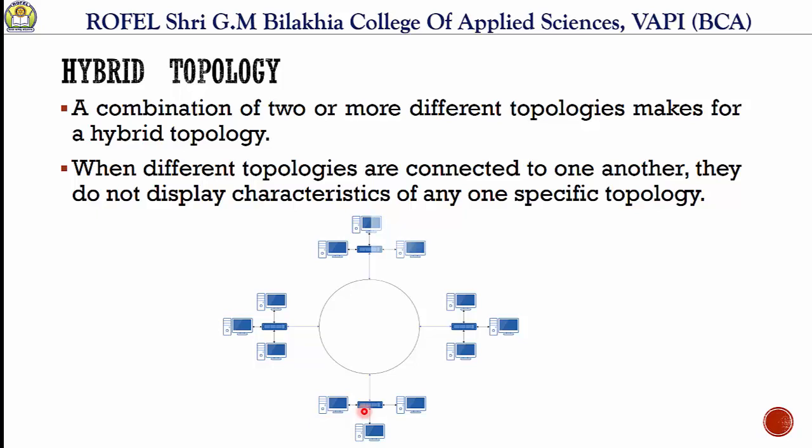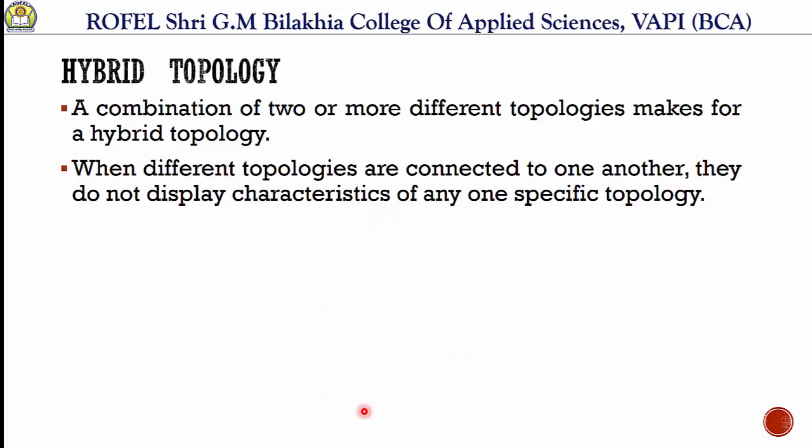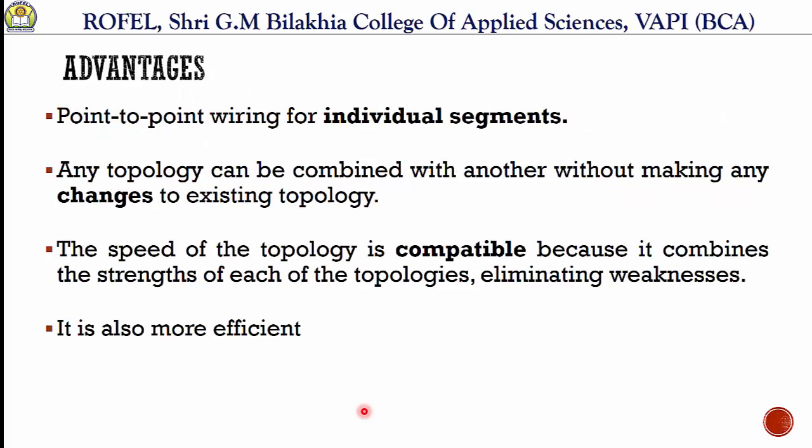Now let us see the advantages of star-bus topology. The first advantage is point-to-point wiring of individual segments — each star network is point-to-point connected with a bus network. The second advantage is that any topology can be combined with another without making any changes to the existing topology.